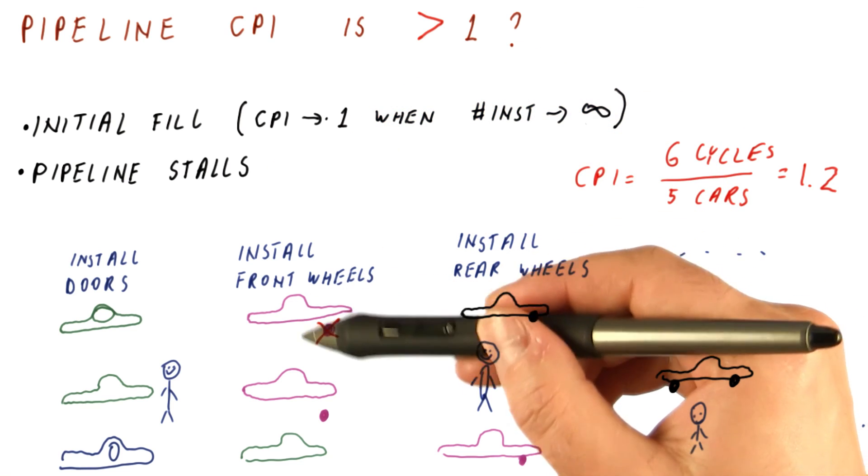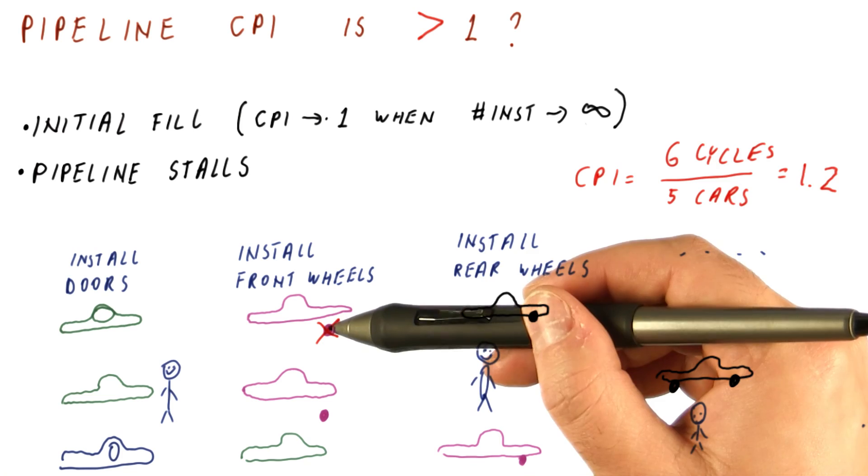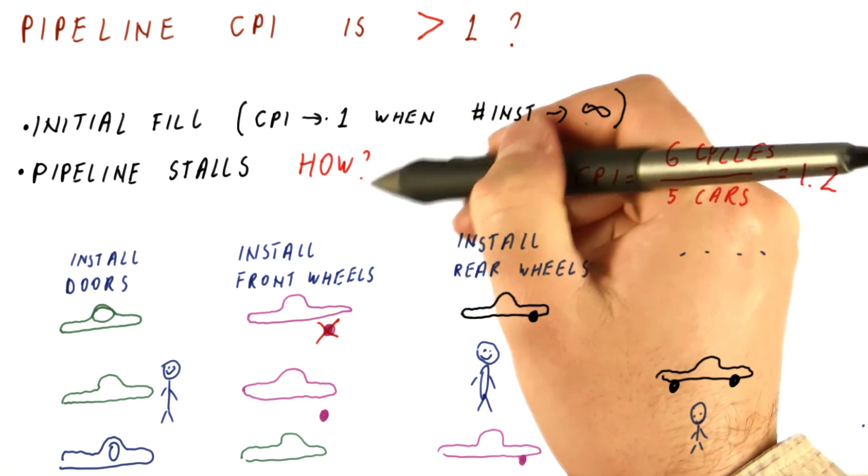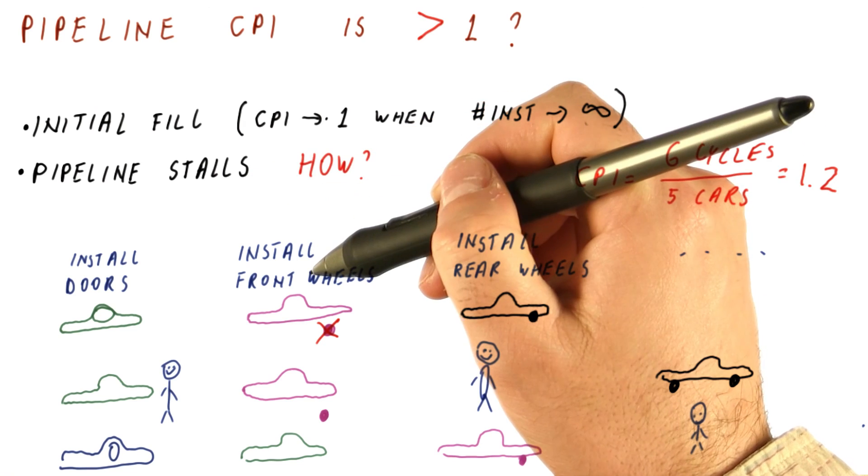So we have seen how a stall can happen in a car pipeline because of broken wheels or something. But in a processor pipeline, how can it be that we have a stall? So what goes broken with an instruction?